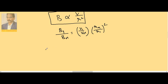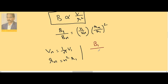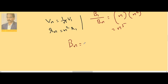From Bohr's model, the velocity in the nth orbit is vₙ = v₁/n, and the radius of the nth orbit is rₙ = n²r₁. Substituting: v₁/vₙ = n, and rₙ/r₁ = n², so (rₙ/r₁)² = n⁴. Therefore B₁/Bₙ = n × n⁴ = n⁵, meaning the magnetic induction in the nth orbit is Bₙ = B₁/n⁵.